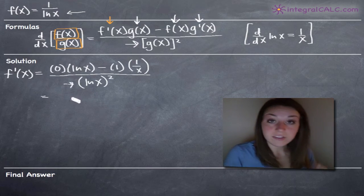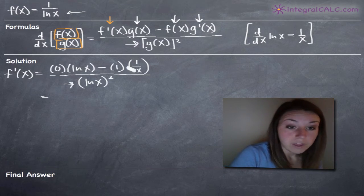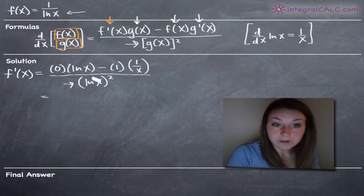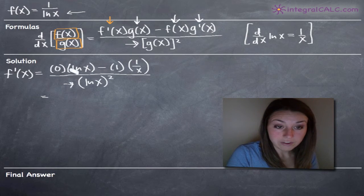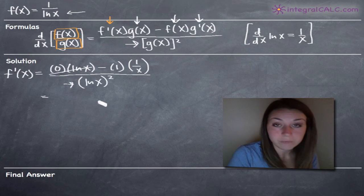So that's essentially our derivative function and now in order to get our final answer, all we need to do is simplify as much as we can. You'll notice that the first term in our numerator is going to go away because we have 0 multiplied by natural log of x. So that whole term is going to become 0.